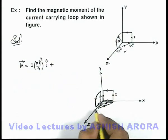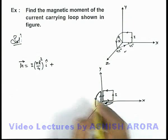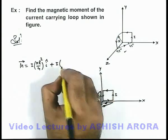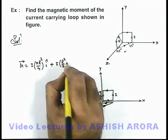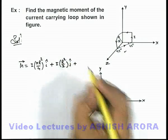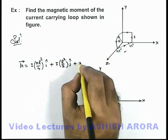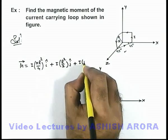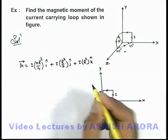for this triangular loop, the total area will be r square by 2, so magnetic moment will be i multiplied by r square by 2 j-cap, plus for this square loop the magnetic moment is i multiplied by r square and the direction is k-cap.